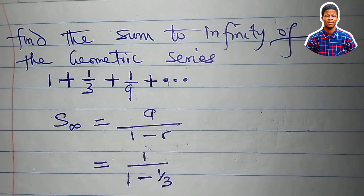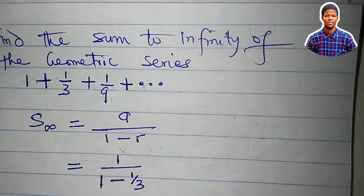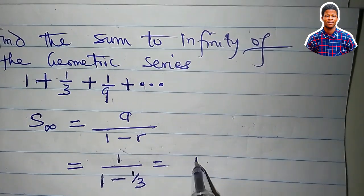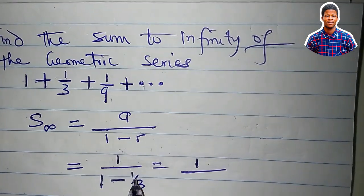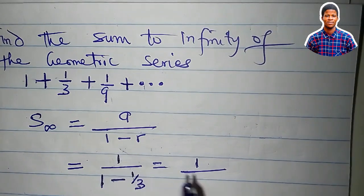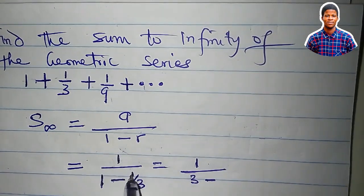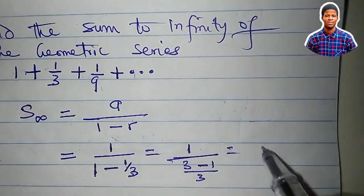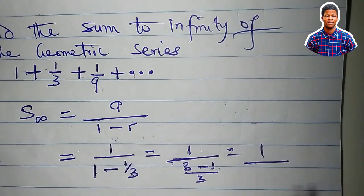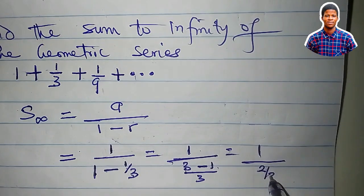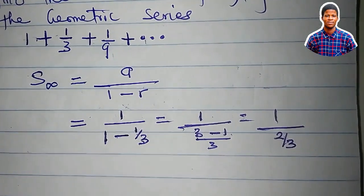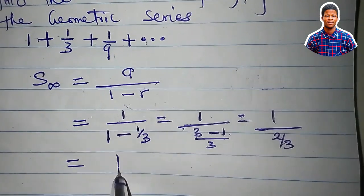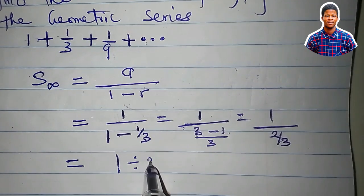The final answer is the sum to infinity, so we have 1 all over, let's break this down: 3 times 1 is 3, then minus 1 over 3. We have 1 all over 3 minus 1 is 2, so 2 over 3. What is that equal to? We have 1 divided by 2 over 3.